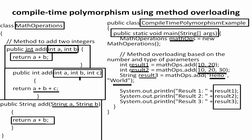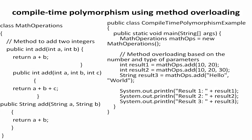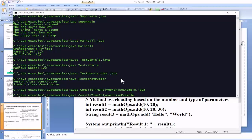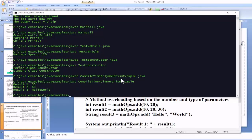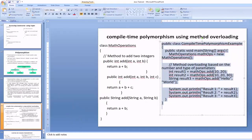Result1, result2, and result3 retrieve values by passing parameters to the add method: based on two integer arguments, three integer arguments, and string-type arguments respectively. After compiling and executing the program, the output is 30, 60, and 'hello world'.